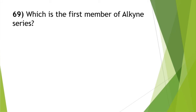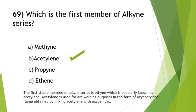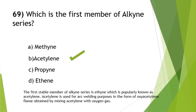Which is the first stable member of the alkyne series? The answer is option B — acetylene (ethyne). Acetylene is used for arc welding in the form of oxy-acetylene flame, obtained by mixing acetylene with oxygen gas.